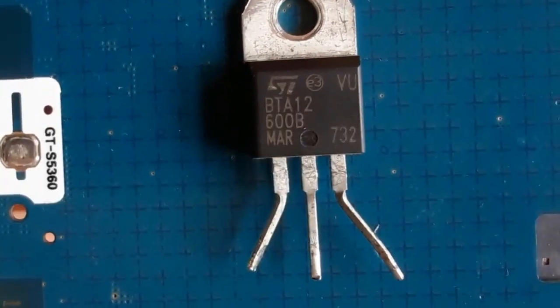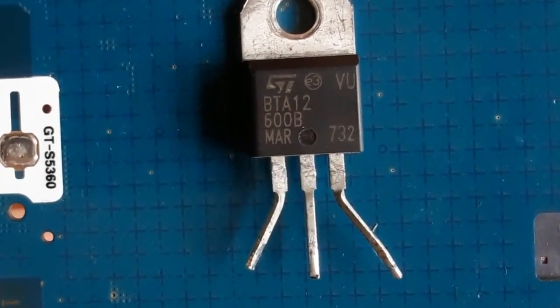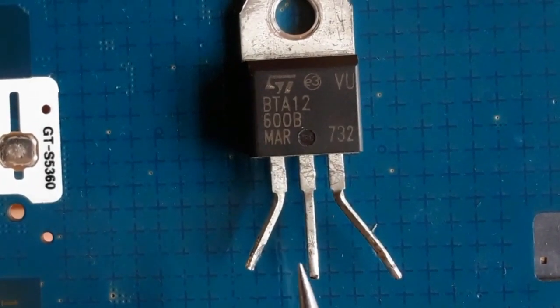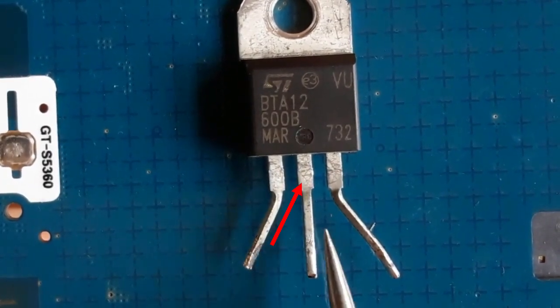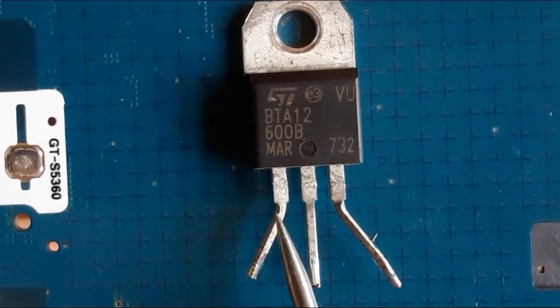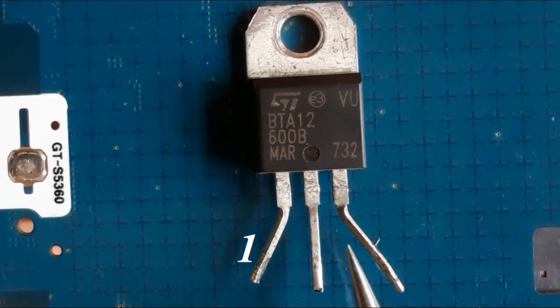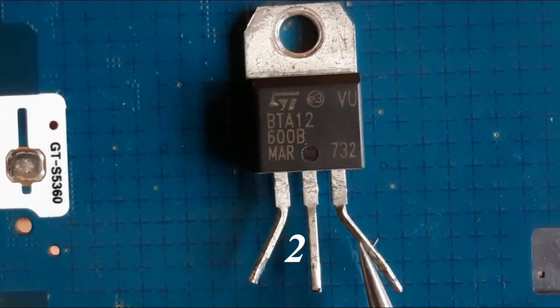As you can see here, we have a TRIAC. Of course, it has three pins or three terminals. So, this is pin number one, pin number two, and pin number three.